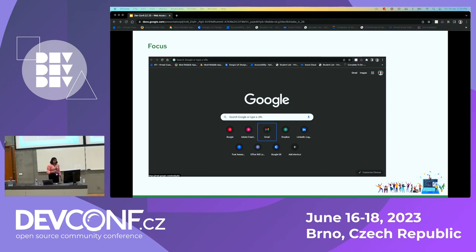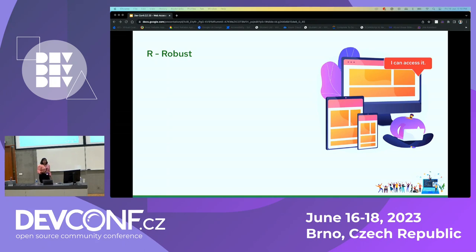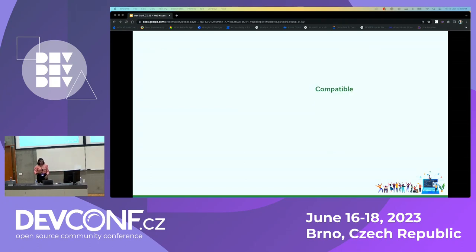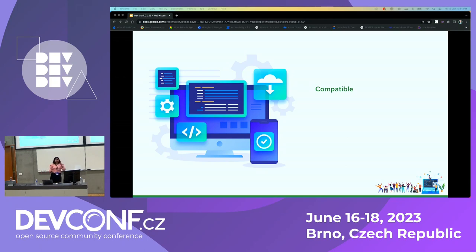The last principle of WCAG is Robust. Robust means the website should be built using technologies that are widely supported and properly interpreted by assistive technologies. The only guideline under Robust is compatible — content should support current and future tools. When we create a website, it should support the current version of all browsers, a few previous versions, and a few future versions. Make sure your website is responsive and supports all resolutions. So those are the four principles: Perceivable, Operable, Understandable, and Robust.